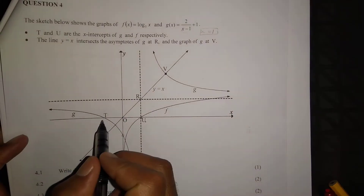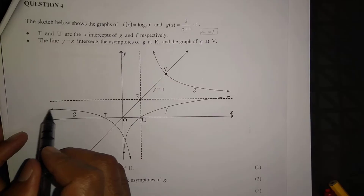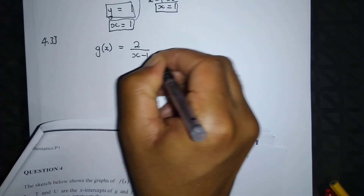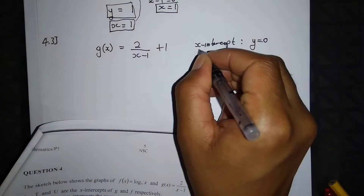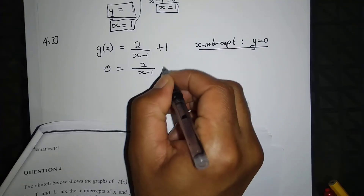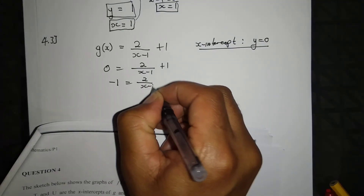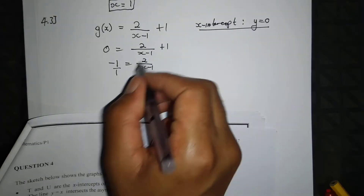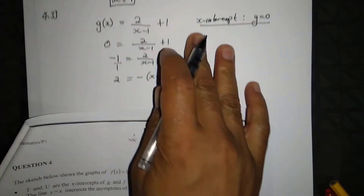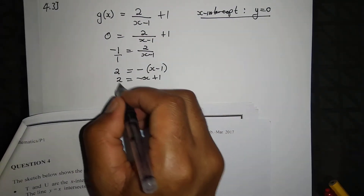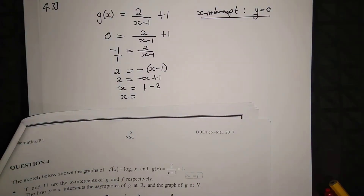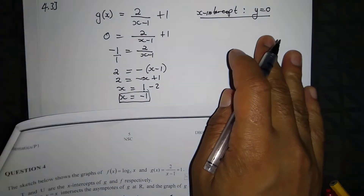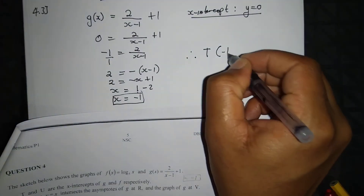Question 4.3: determine the coordinates of T, which is the x-intercept of function g. For g, which is 2 divided by (x minus 1) plus 1, we let y equal to 0. So 0 equals 2 over (x minus 1) plus 1. Transposing gives negative 1 equals 2 over (x minus 1), which simplifies to x equal to negative 1. Therefore the coordinates of T are (negative 1, 0).